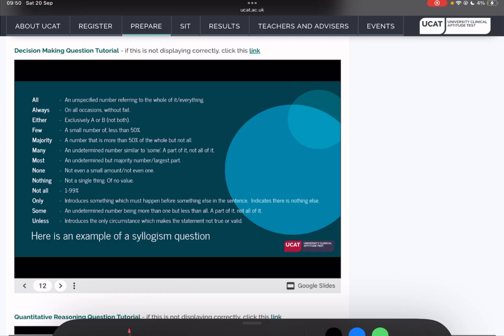Let's just go through them from top to bottom. So all, for a lot of these I like to use a 0 to 100 scaling system. All will mean 100, so everything. If it said all A is B, quite simply, just like this.